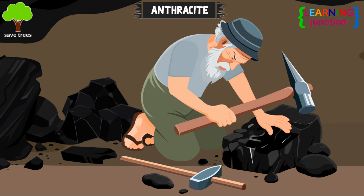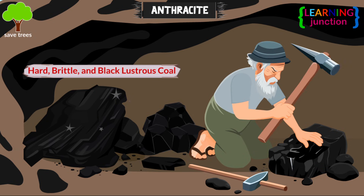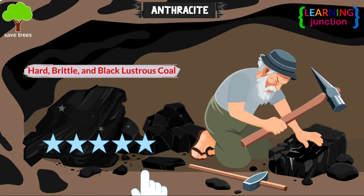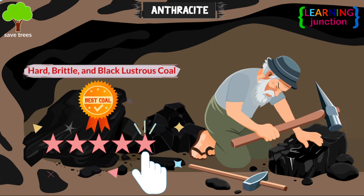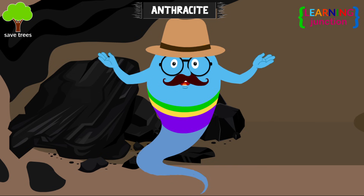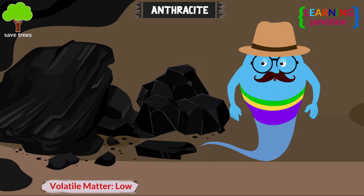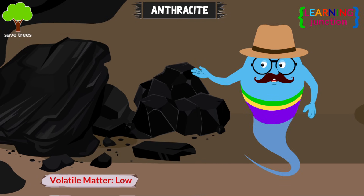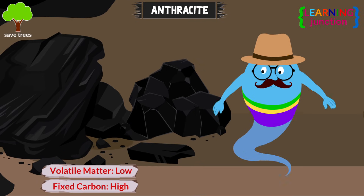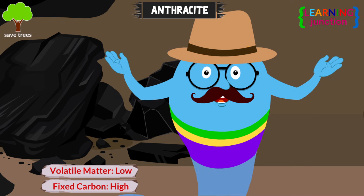Anthracite — this hard, brittle, and black lustrous coal is used as a high-grade domestic fuel. It contains a low percentage of volatile matter and a high percentage of fixed carbon.